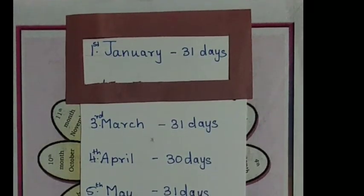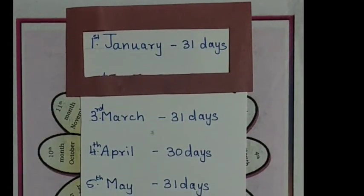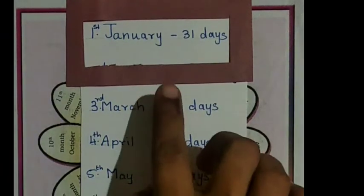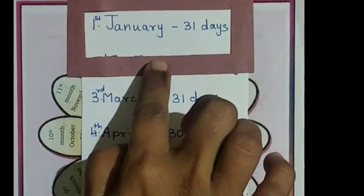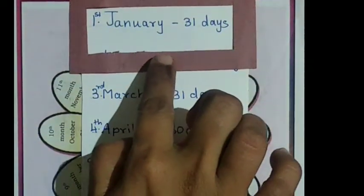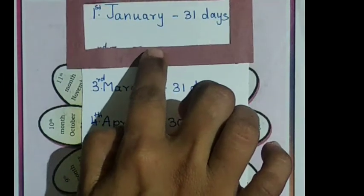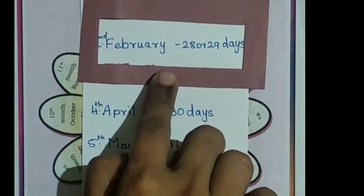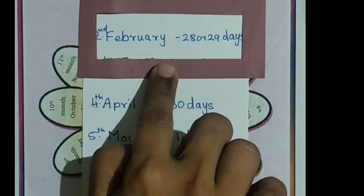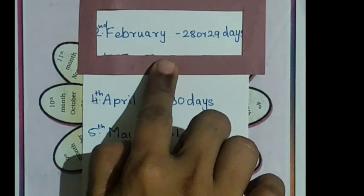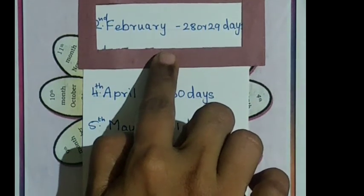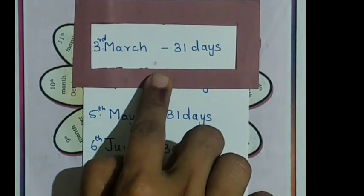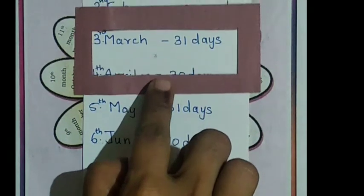Children, there are 12 Months of the Year. First Month of the Year is January. It has 31 Days. Second Month of the Year is February. It has 28 or 29 Days. Third Month of the Year is March. It has 31 Days.